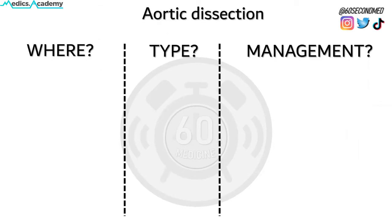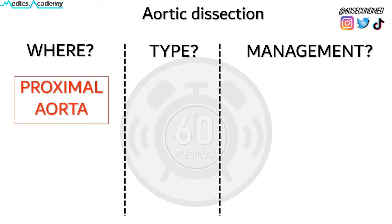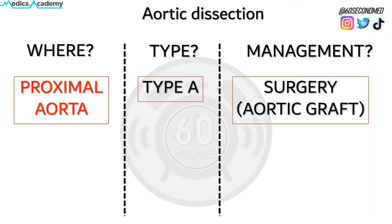Aortic dissection management depends on where the dissection occurs. If it occurs in the proximal aorta — that's the ascending aorta and the aortic arch — it's termed a type A aortic dissection, and these are managed surgically, usually with an aortic graft.